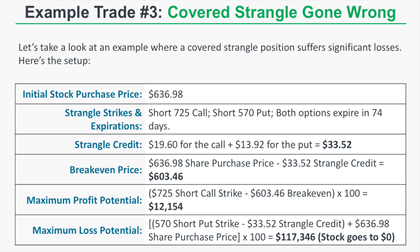The maximum profit potential is the $725 short call strike minus the $603.46 break-even, times 100, equaling $12,154. The maximum loss is the $570 short put strike minus the $33.52 strangle credit plus the $636.98 share purchase price, times 100, equaling $117,346 — occurring if the stock falls to $0.